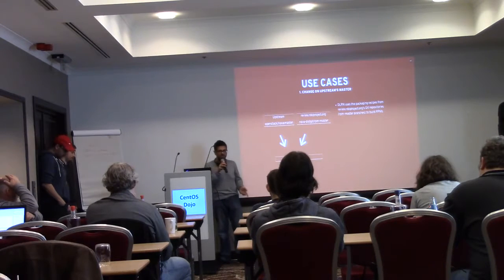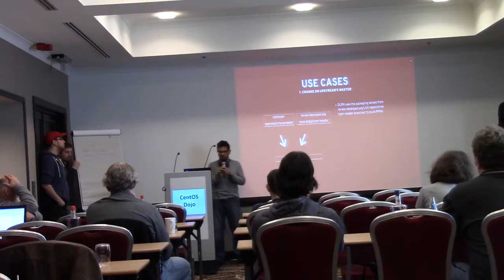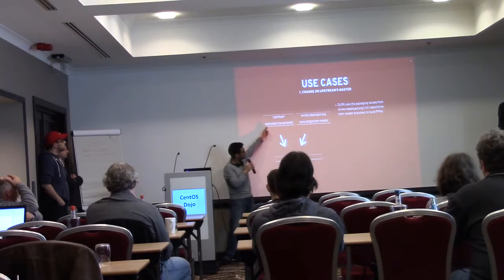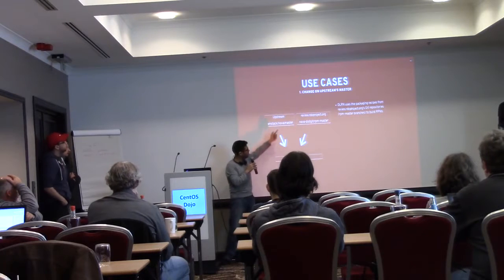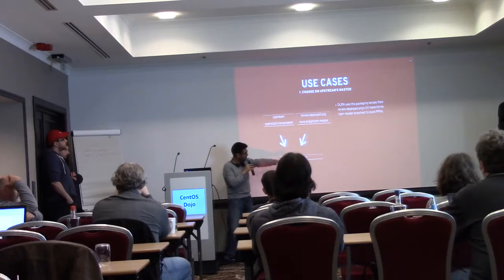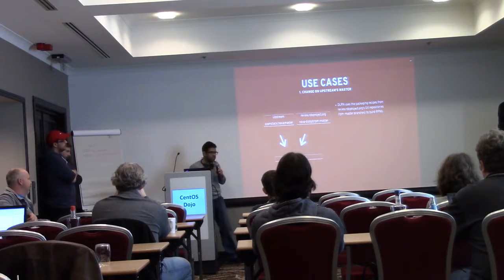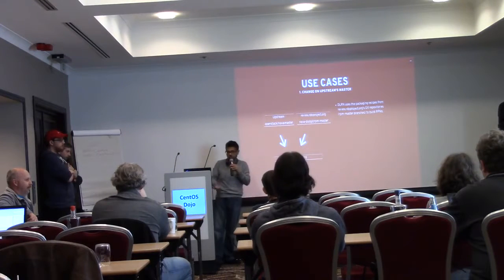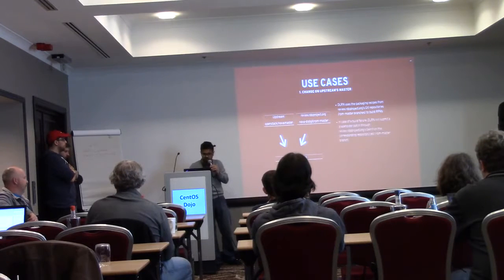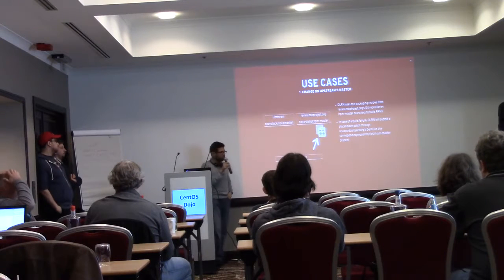You also have some changes in upstream projects that may break the package — for example, a binary was removed or things were moved around. So we remove those changes from upstream, then try to update the packages in the existing spec file, and then we build the package. There are two cases: either it succeeds — everything is working, we have CI, we're good — or sometimes we have both failures.